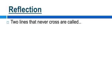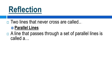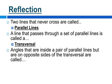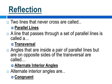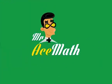Let's review. Two lines that never cross are called parallel lines. A line that passes through a set of parallel lines is called a transversal. Angles that are inside a pair of parallel lines but are on opposite sides of the transversal are called alternate interior angles. Alternate interior angles are congruent. Thanks for using Mr. Ace Math.